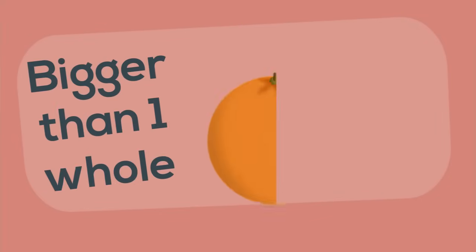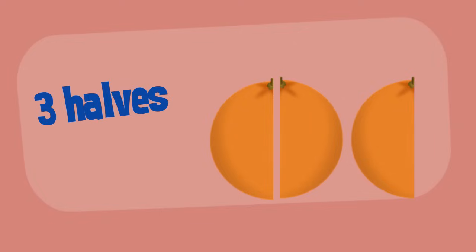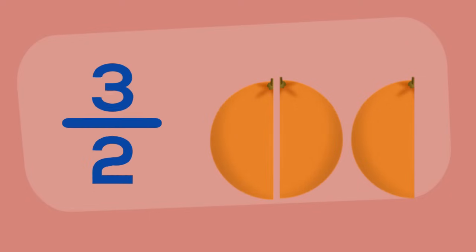But fractions can be bigger than one whole. For example, here we have three-halves of an orange. One-half, two-halves, three-halves. You can see that three-halves is larger than one whole, because we have one whole orange and an extra half.